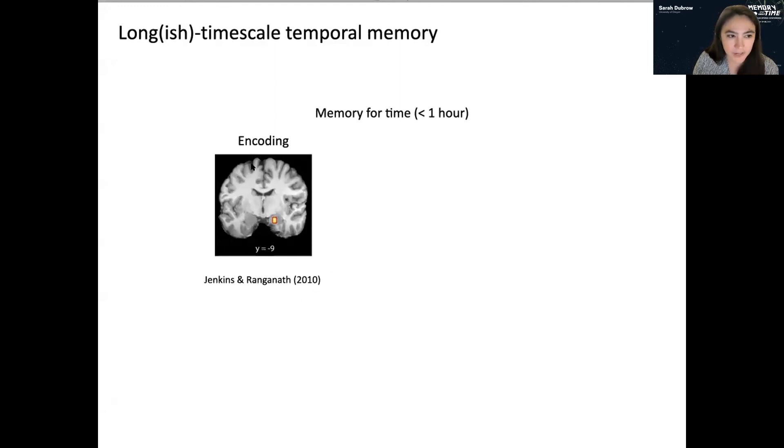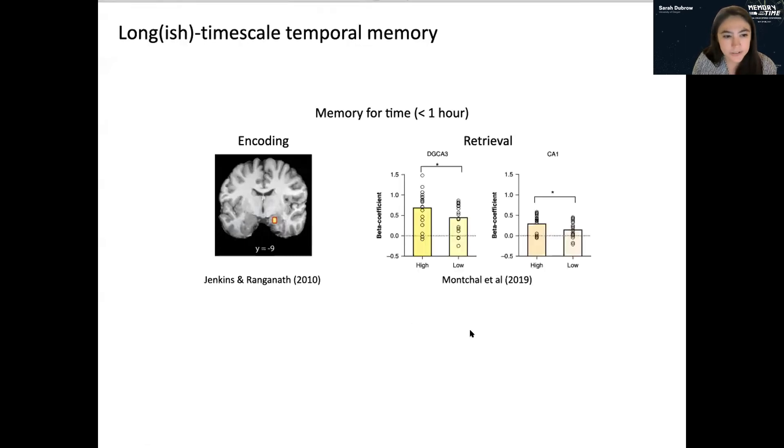In this study, the authors found that the hippocampal activation was associated with encoding temporal information, was associated with accuracy in course temporal memory so on the order of an experimental session. And more recent data from my lab has shown that at retrieval increased activation in the hippocampus is associated with higher temporal memory precision again on the order of an experimental session. And interestingly, this effect is not only seen in hippocampus but also in entorhinal and perirhinal cortices.